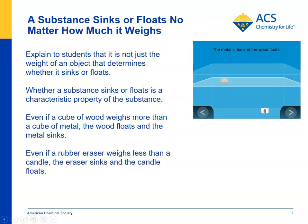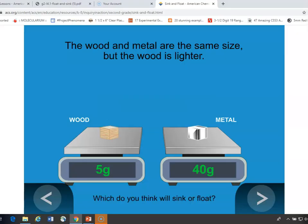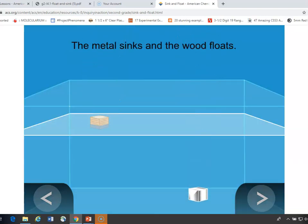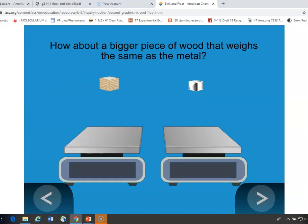You can show an animation which helps students understand that floating or sinking is a characteristic property of a material. A metal block and a wooden block are placed on scales, and you can see that the metal block is much heavier. You can ask students whether they think the metal or the wood will sink or float — and the metal sinks.